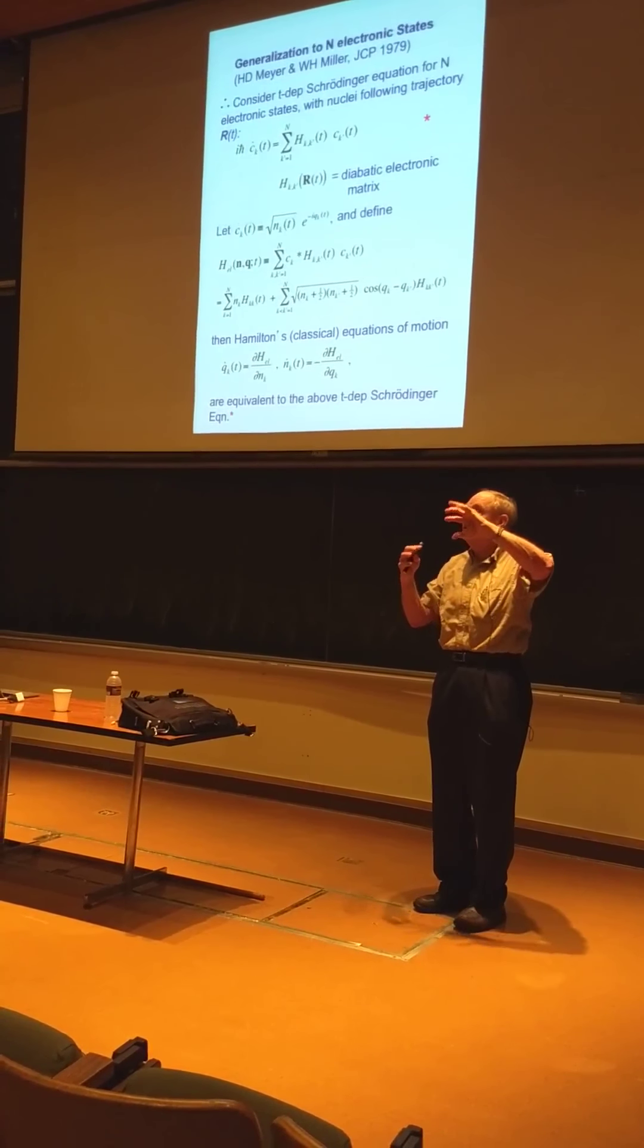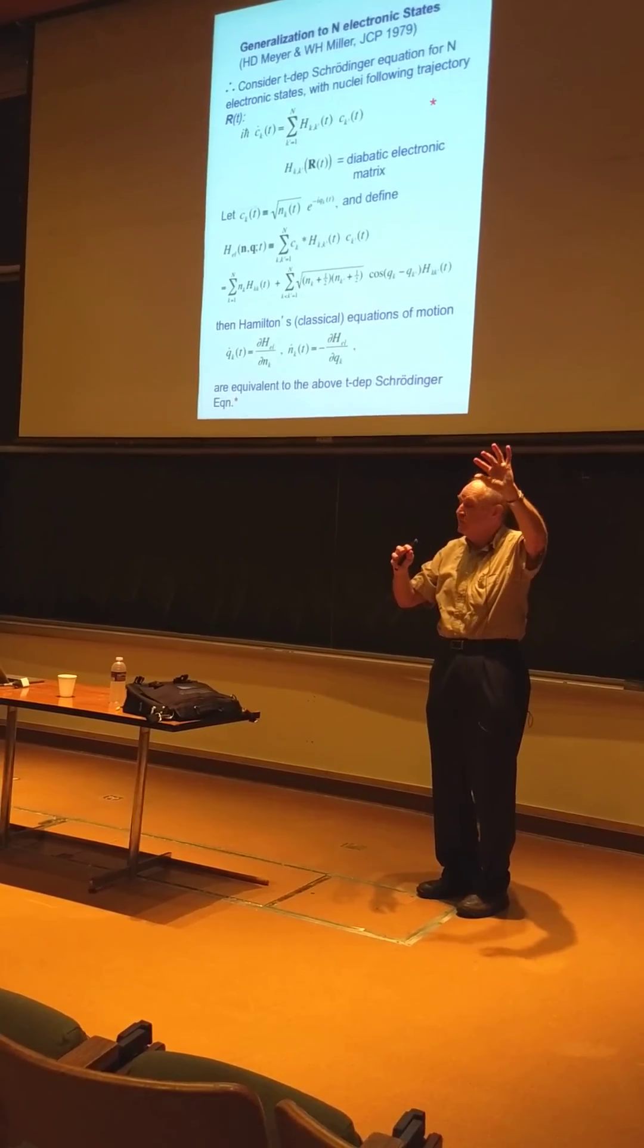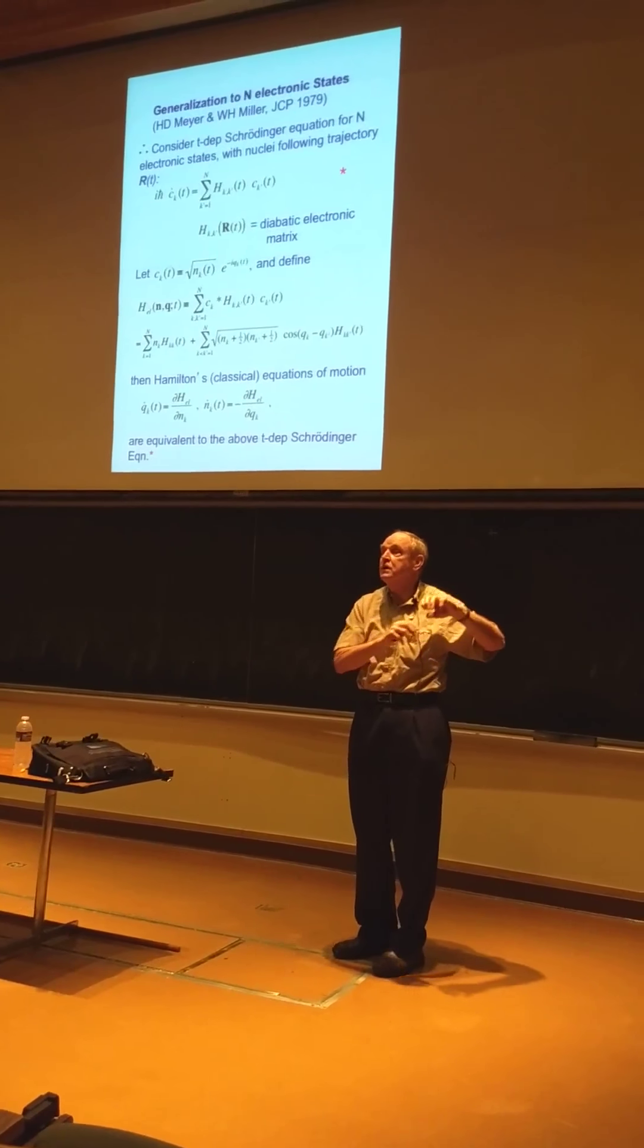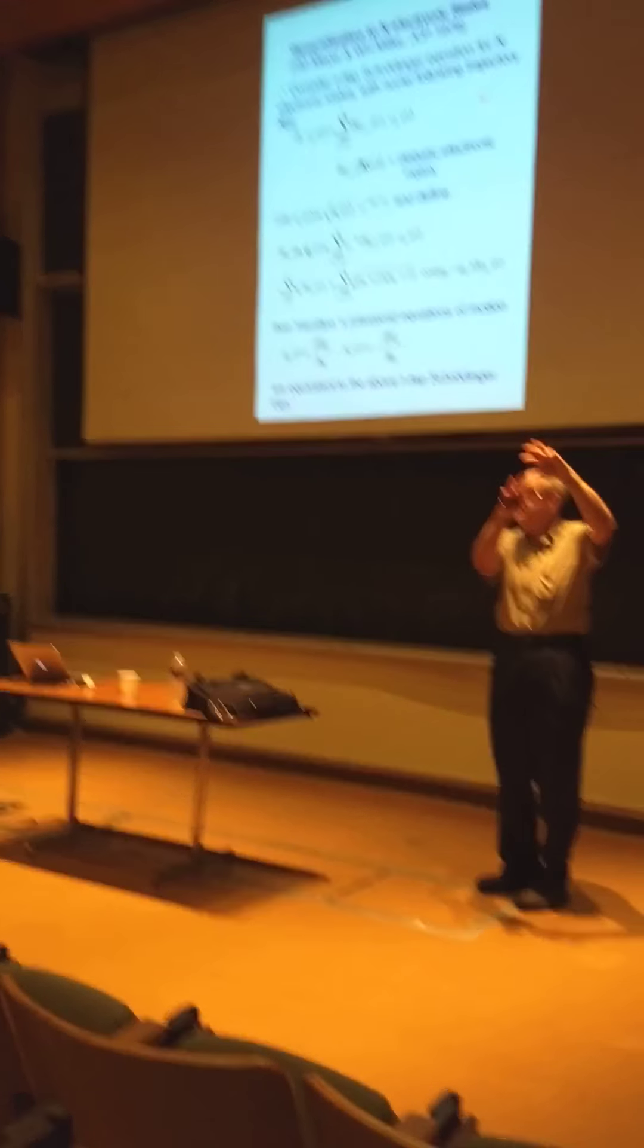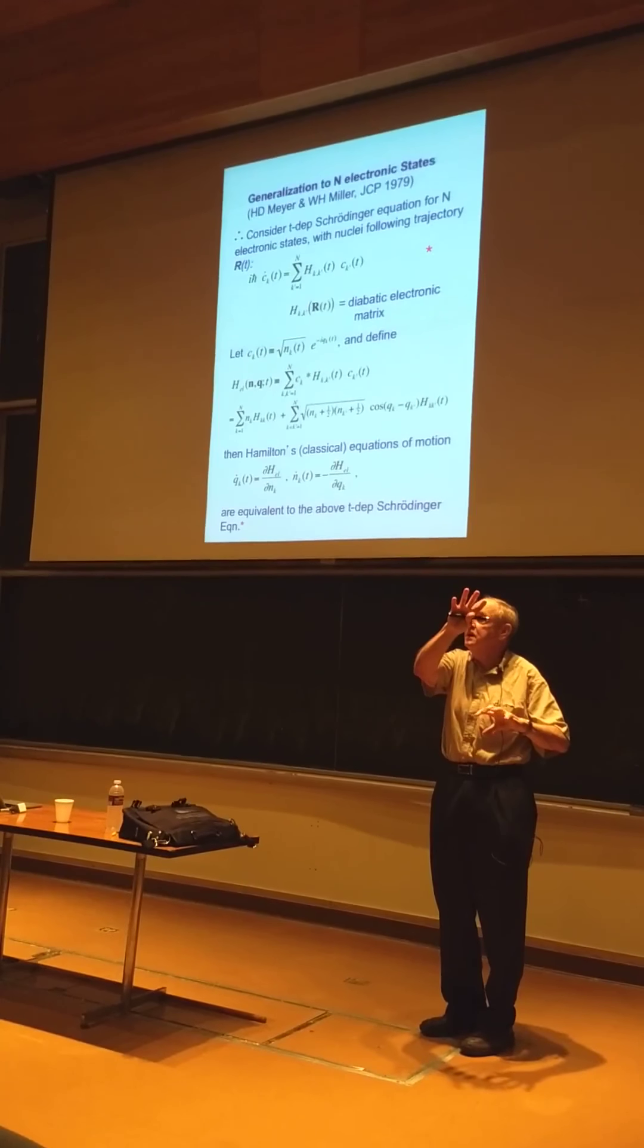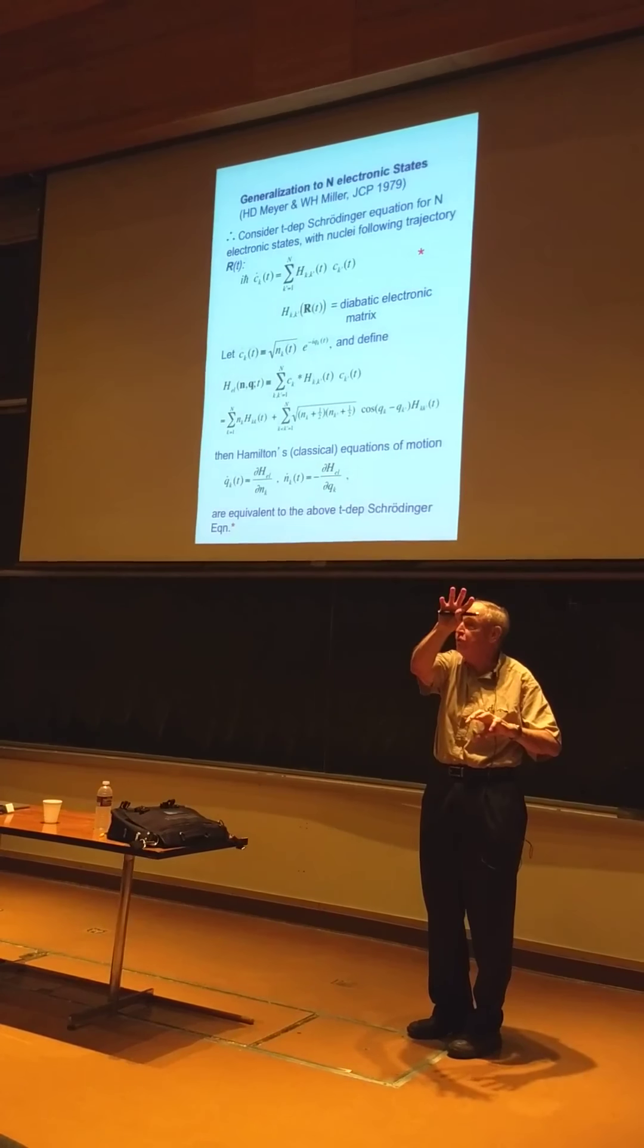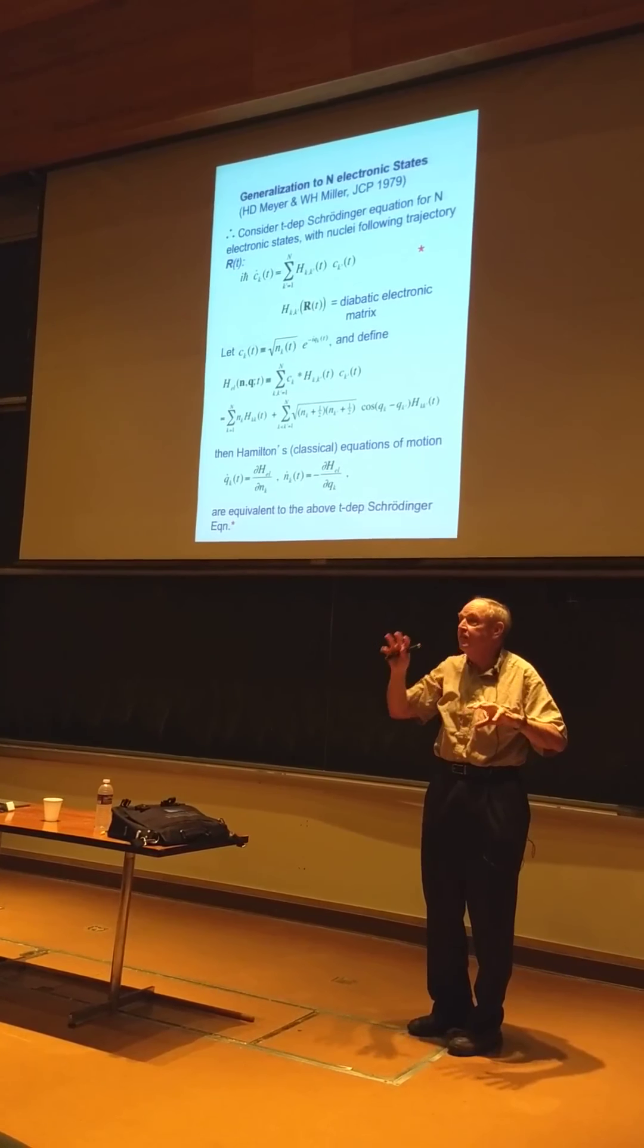Some of those trajectories will end up on surface one or in its vicinity. Some of the other of that ensemble will end up on surface two. And then we get the probabilities of being on the surfaces by saying, what fraction end up on this surface? What fraction end up on that surface? And so, the contributions to trajectories to different final states come from totally different trajectories.